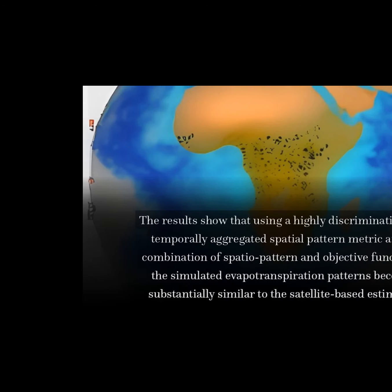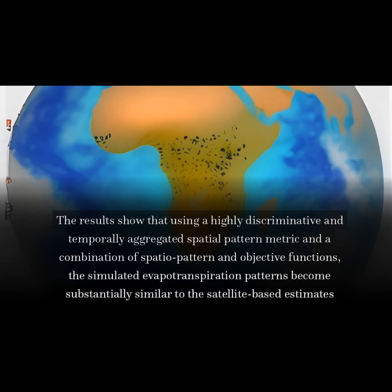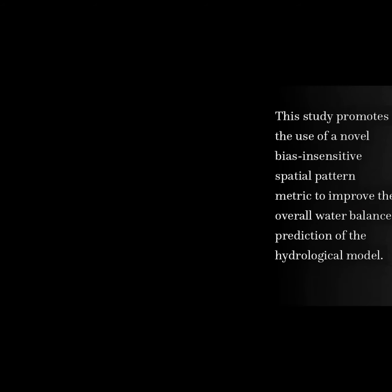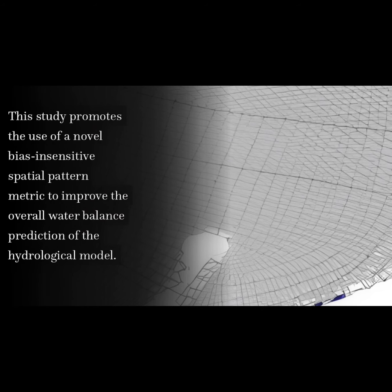The results show that using a highly discriminative and temporally aggregated spatial pattern metric and a combination of spatial pattern and objective functions, the simulated evapotranspiration patterns become substantially similar to the satellite-based estimates. This study promotes the use of a novel bias-insensitive spatial pattern metric to improve the overall water balance prediction of the hydrological model.